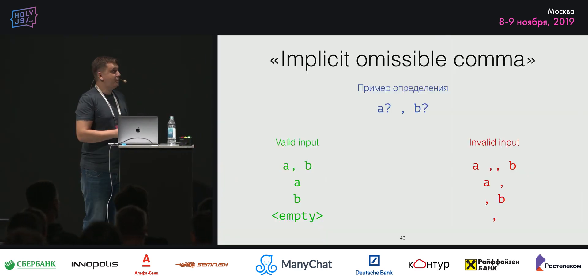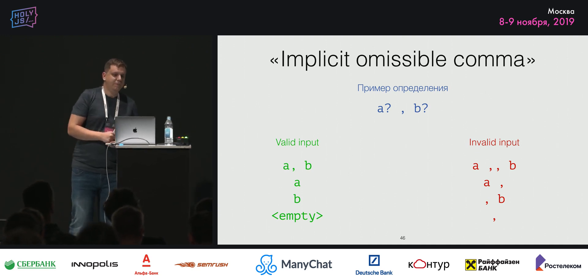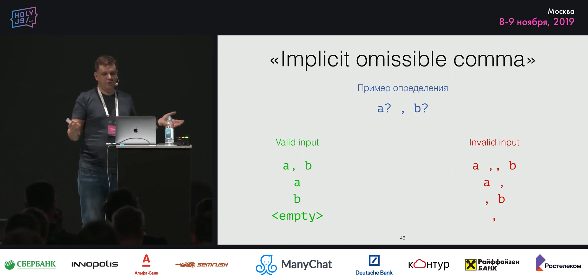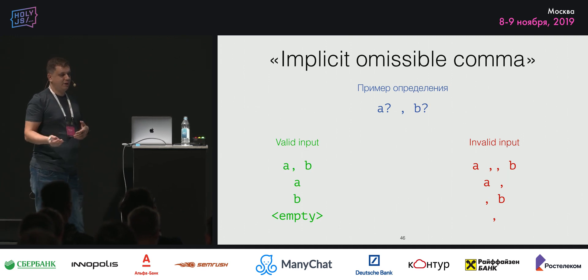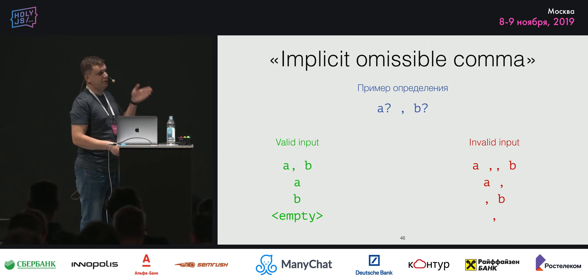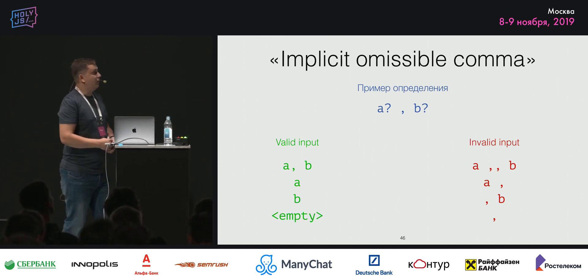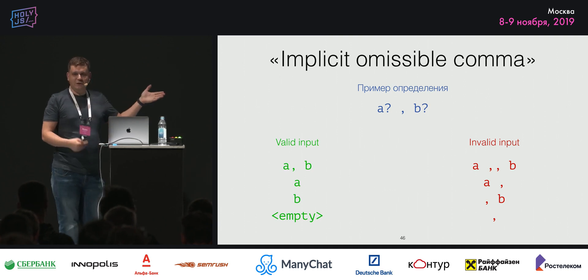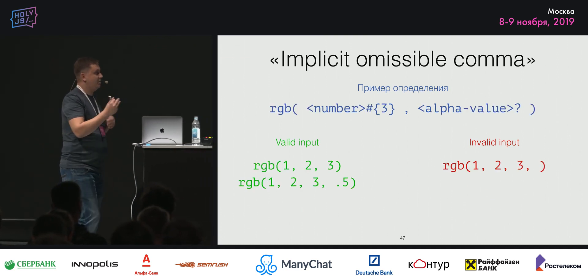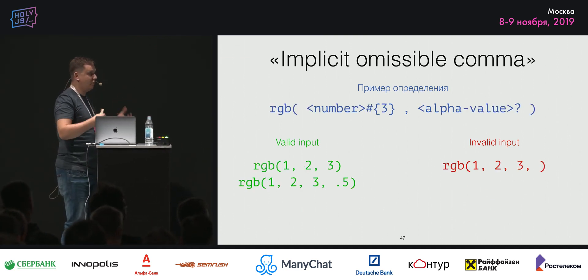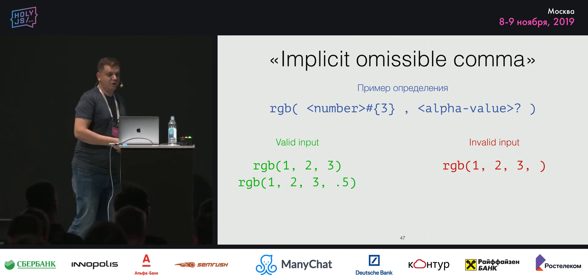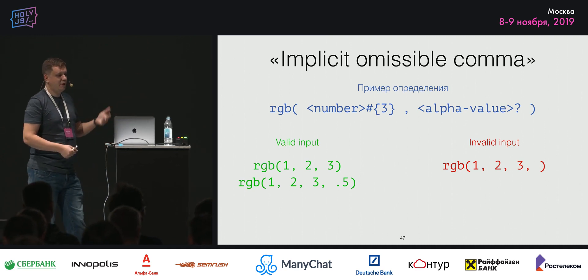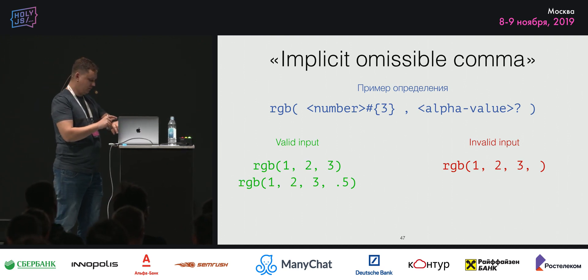Есть нюансы — особые правила CSS definition syntax. Например, implicit omissible comma — неявно опускаемая запятая. Если у нас есть a и b, разделённые запятой, и оба значения опциональны, то валидные значения: a,b вместе, только a, только b и пустой ввод. А вот две запятые подряд или висячая запятая — так нельзя. Реальный пример: функция rgba с компонентом alpha value, помеченным «?». Если мы это значение опускаем, запятая тоже уходит — оставить висячую запятую нельзя.